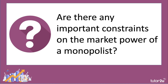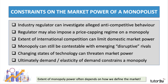What about constraints on a monopolist? Oftentimes in essays you read that a monopolist has unfettered, unlimited power — they can set any price they want and make whatever profits they like. Of course that's not the case. All businesses, even if they have market power, face constraints. Let me take you through some examples that might be helpful for your notes. The first constraint is that there could well be an industry regulator.